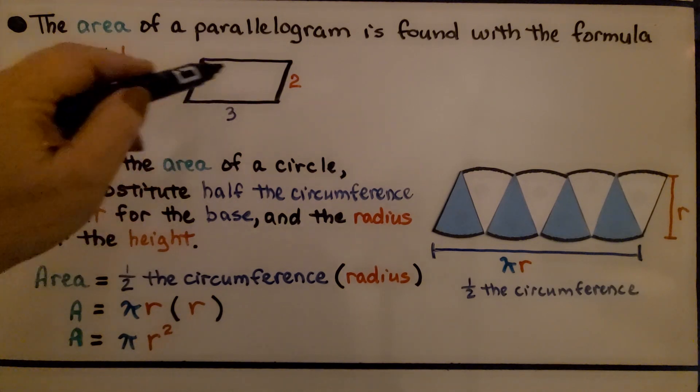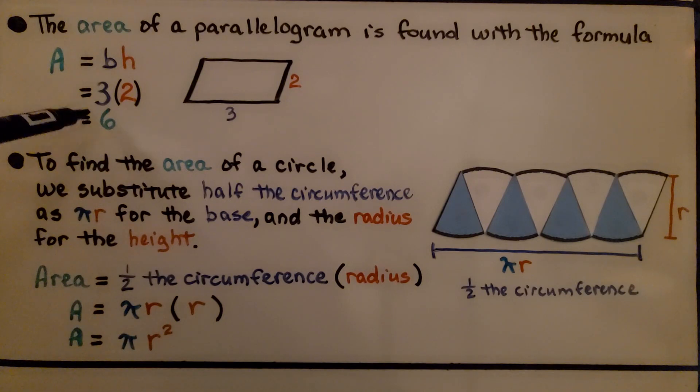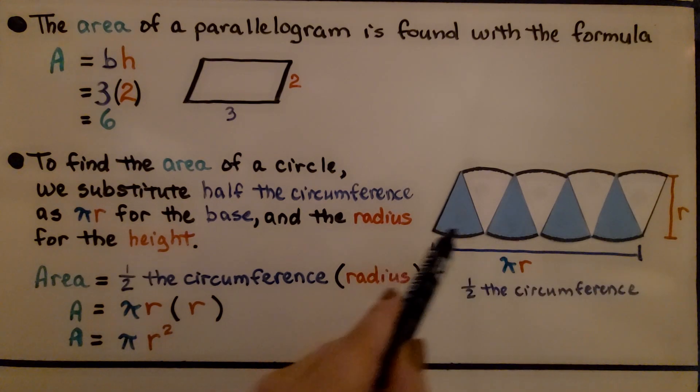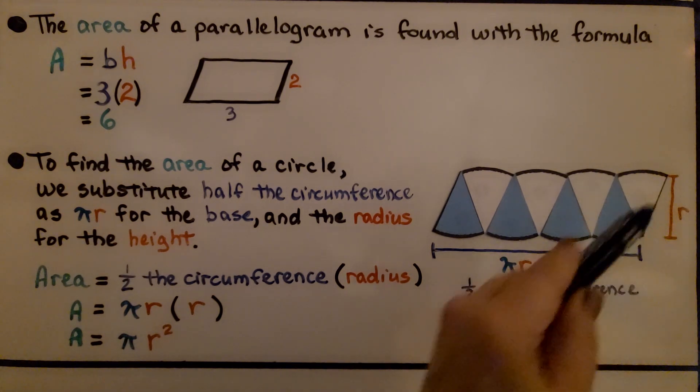And whatever units this is—feet, inches, centimeters, meters, whatever—we've got six of them for our area. So to find the area of a circle, we substitute half the circumference as pi r for the base and the radius for the height.